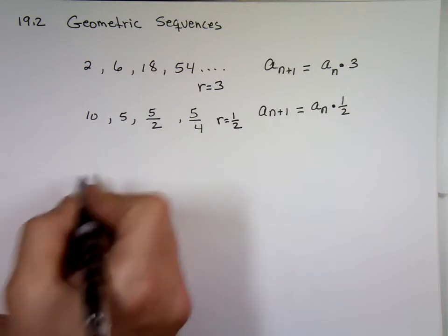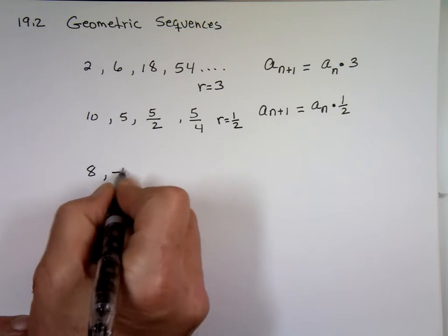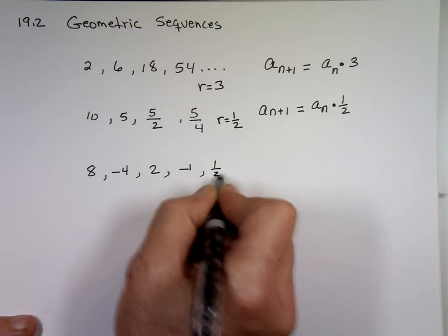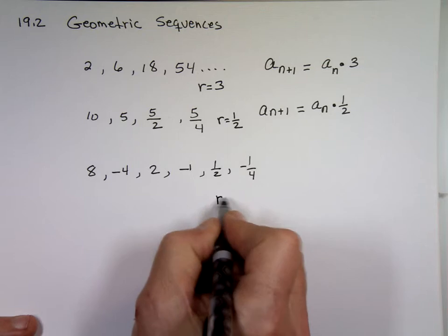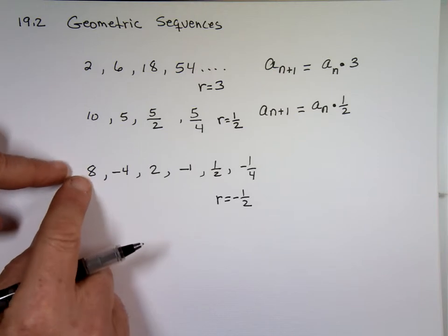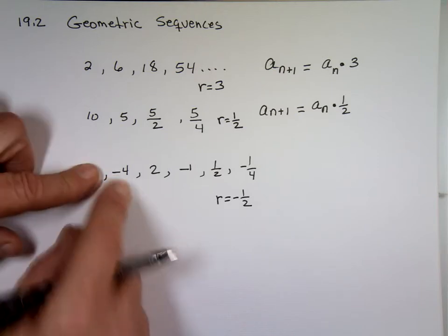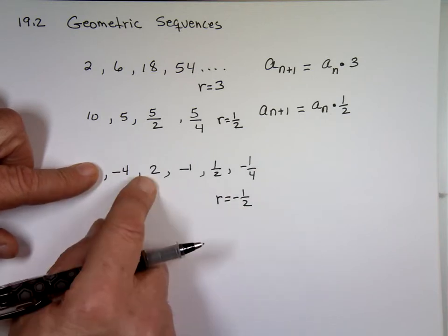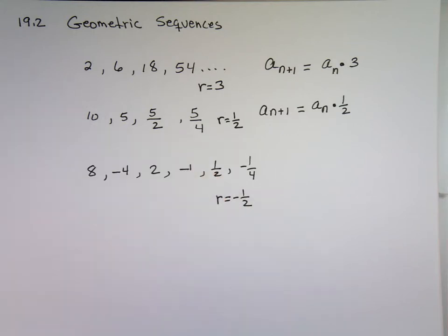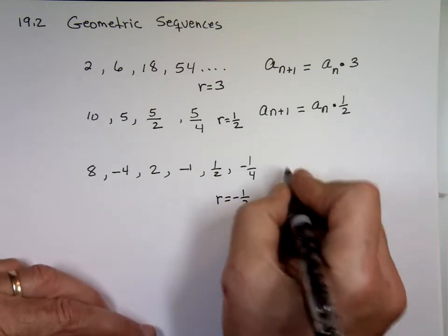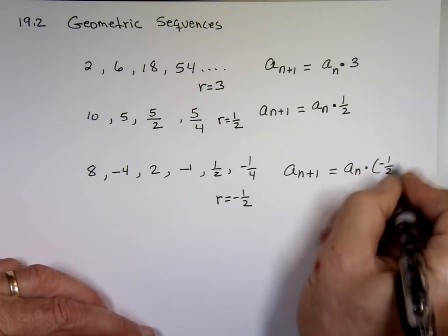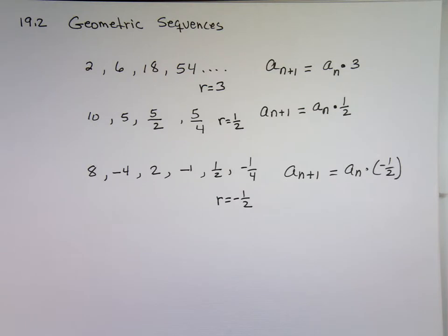You could have positive and negative. By the way, watch this. Eight, negative four, two, negative one, one half, negative one fourth. R is negative one half. Each number, you take this, multiply it by negative one half. What's negative one half times eight? Negative four. What's negative four times a negative one half? Positive two. What's two times a negative one half? Minus one. What's minus times a minus? Plus. So R could be negative. So a_n+1 here, it's whatever a_n times negative one half. Still multiplication. It alternates sign. It goes plus, minus, plus, minus, plus, minus.